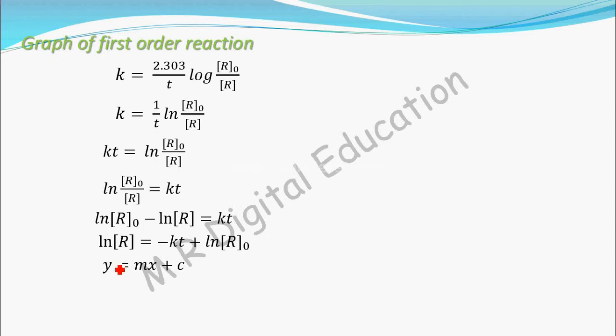In this equation, t is independent variable and ln [R] is dependent variable. In this equation, c is intercept on y-axis and m is slope. In this equation, ln [R]0 is intercept on y-axis and minus k is slope.